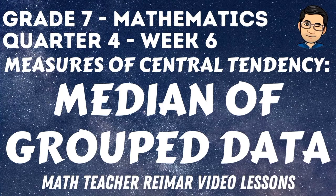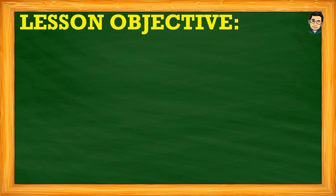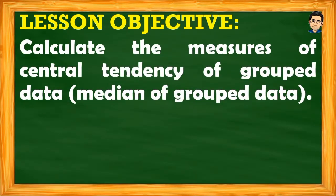When we say median, this is the middle value when the data are arranged in either ascending or descending order. Our lesson objective is to calculate the measures of central tendency of grouped data, specifically the median of grouped data. Since we are dealing with grouped data, I need to explain this separately from ungrouped data. Let's start.